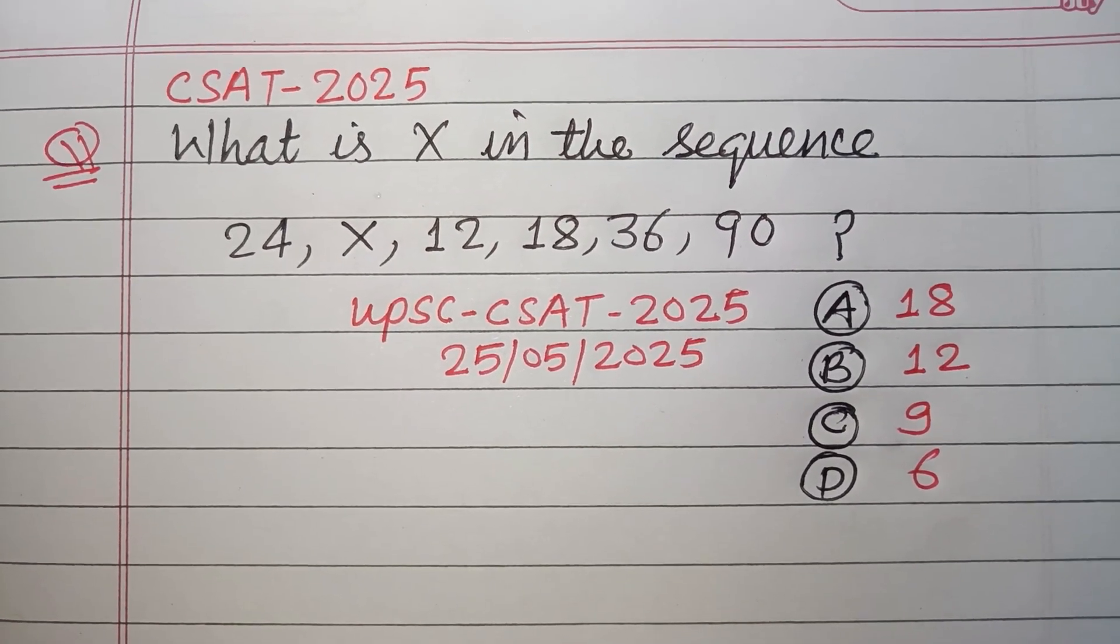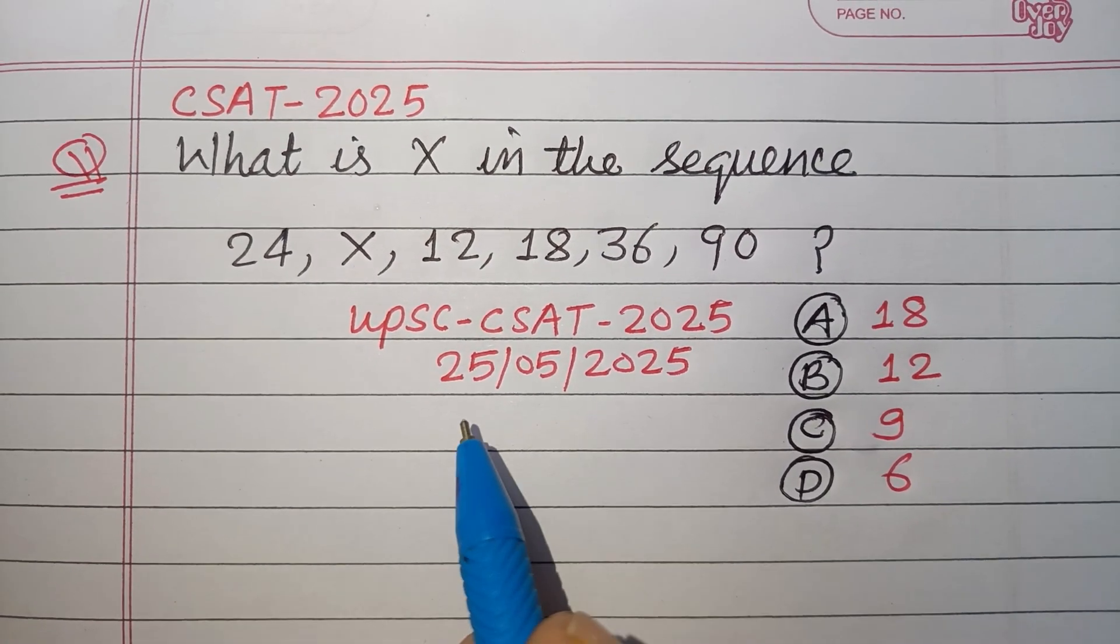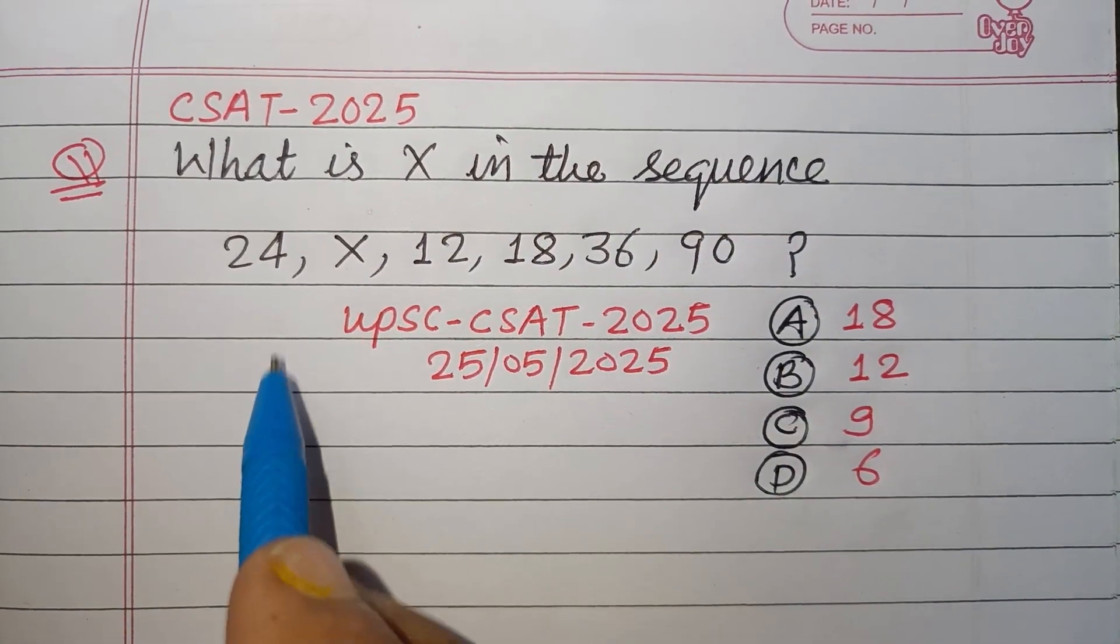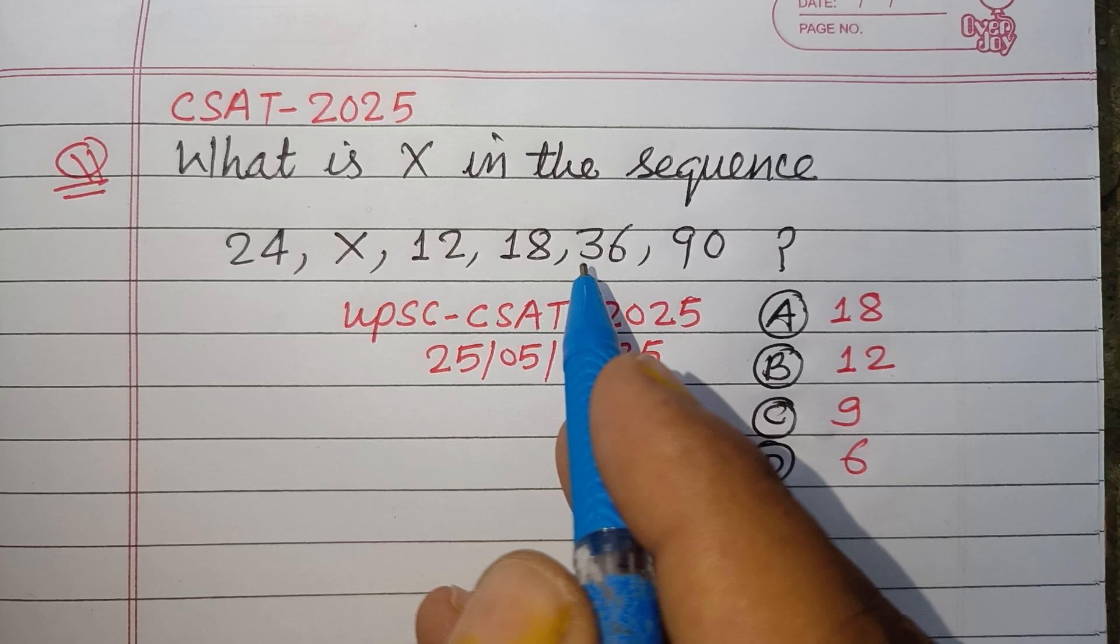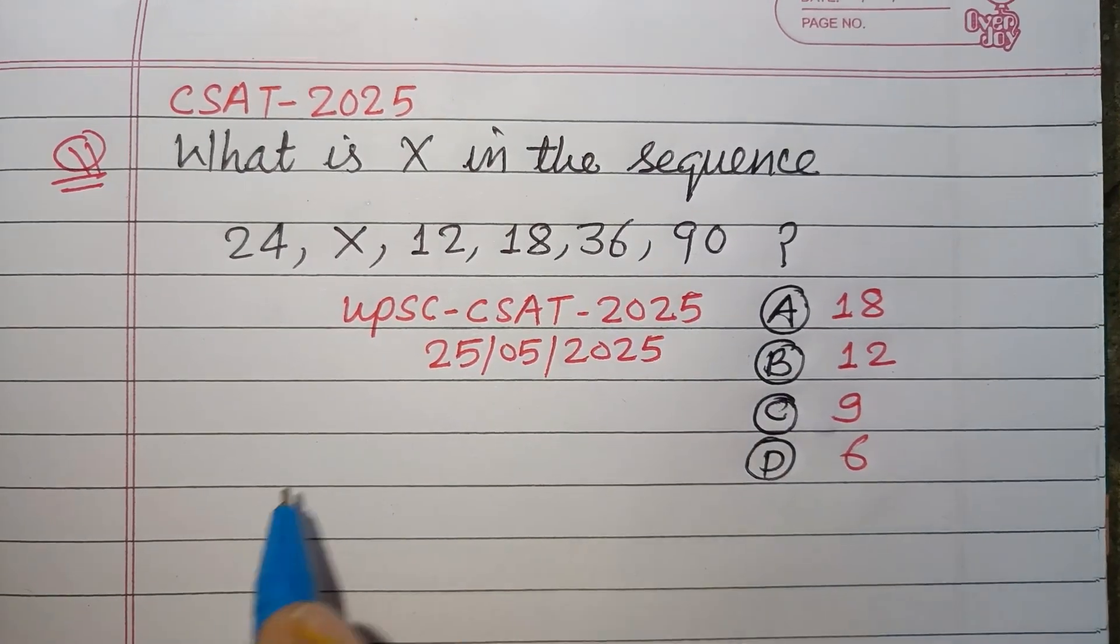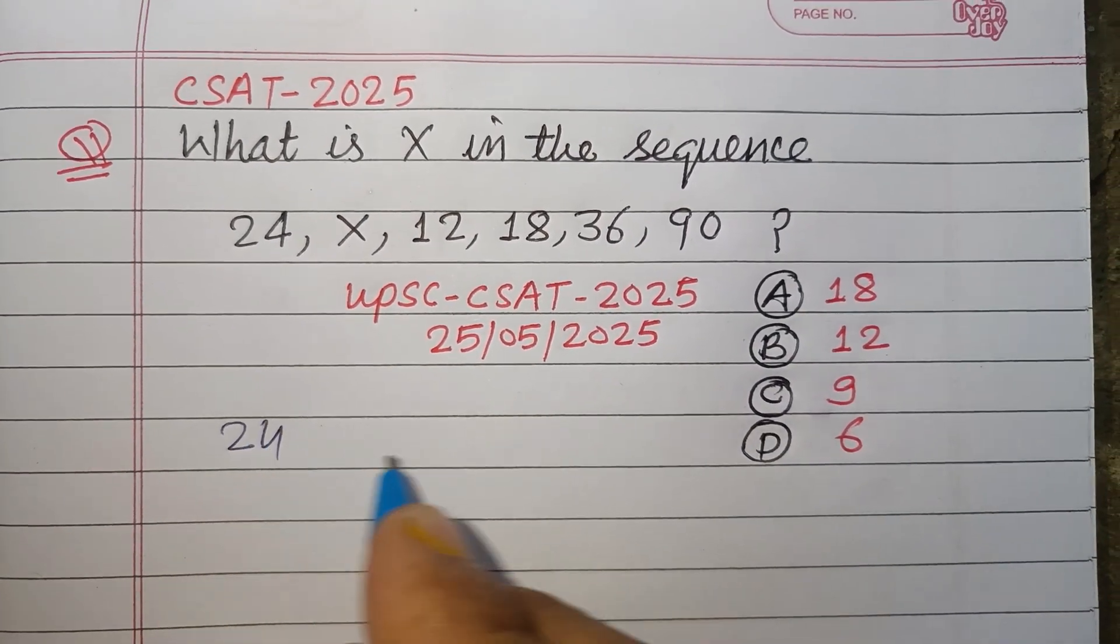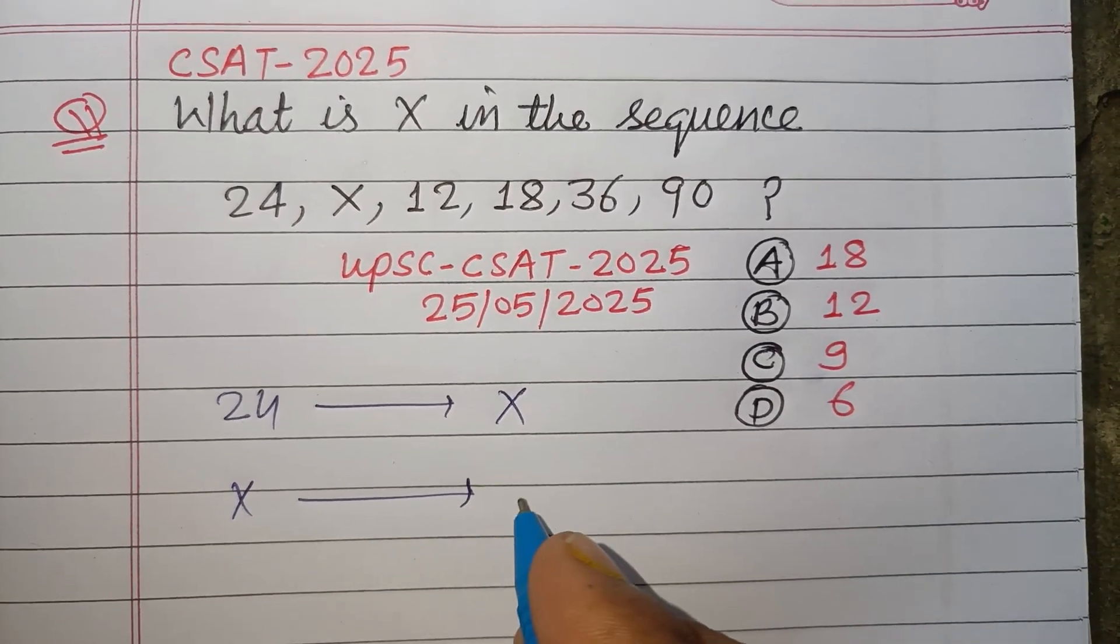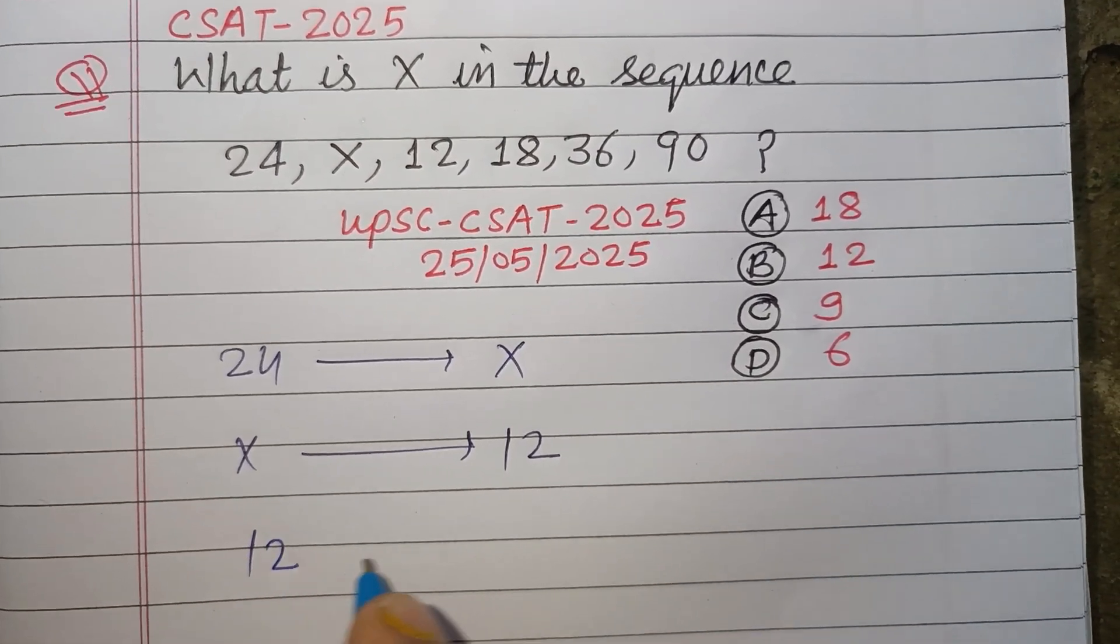Hello viewers, warm welcome to this YouTube channel. Question from UPSC CSET 2025: what is X in the sequence? Here 24, X, 12, 18, 36, 90 is given. So 24 changes to X, and X changes to 12.